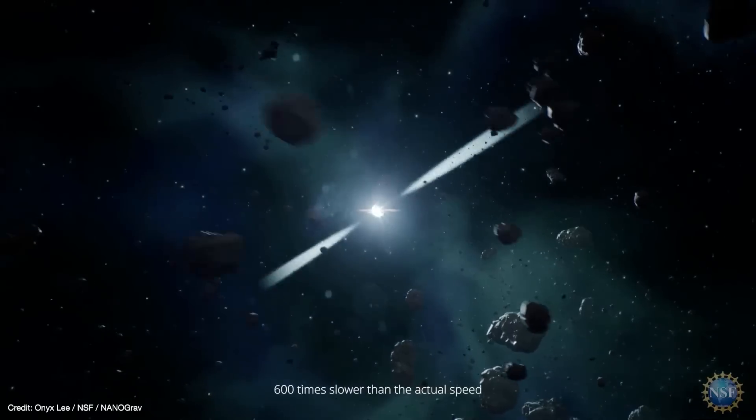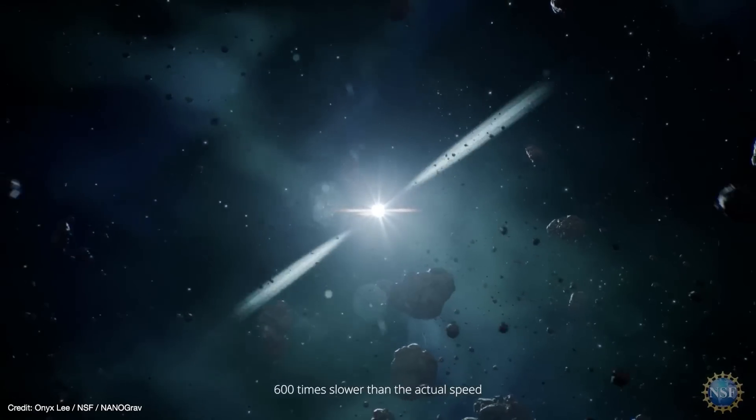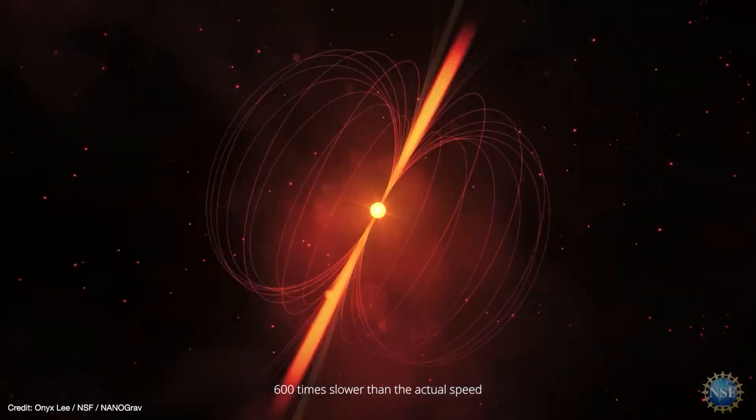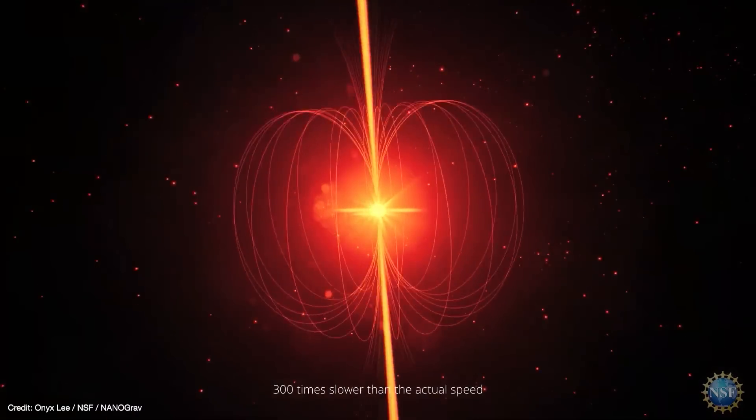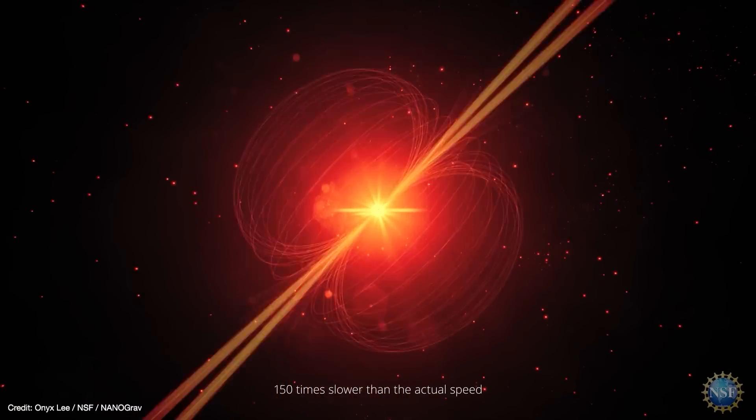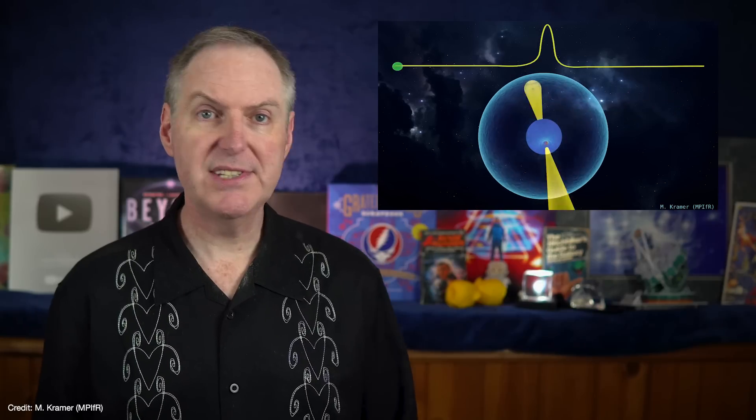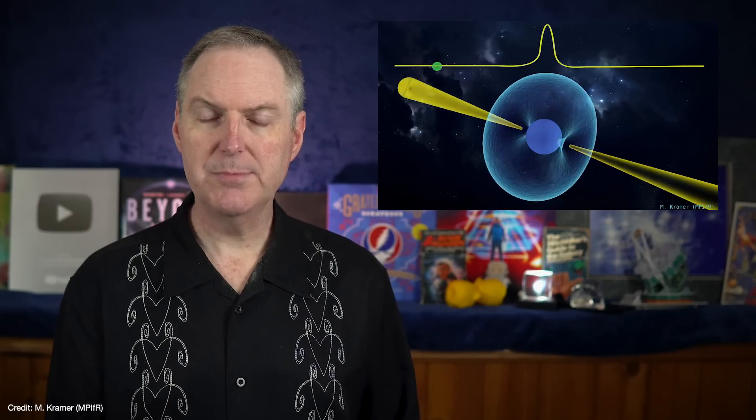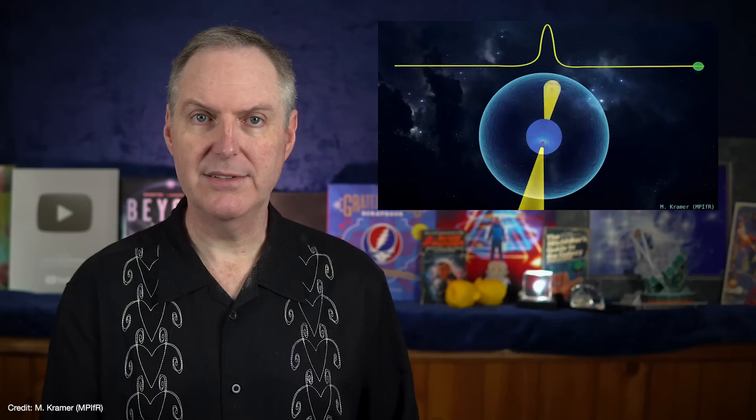That fast spin makes neutron stars highly magnetized, so they emit twin beams of radiation out their magnetic poles. When one of those beams sweep along our line of sight, we detect the neutron star as a pulsar. So pulsars are like cosmic lighthouses that rotate several times a second. And that makes them natural clocks because we can detect their pulses with a regular cadence.